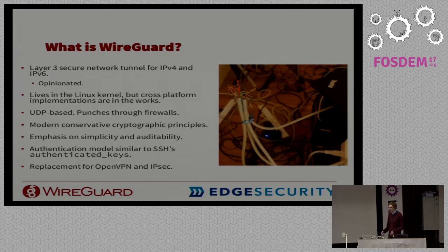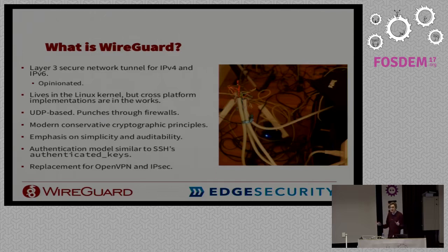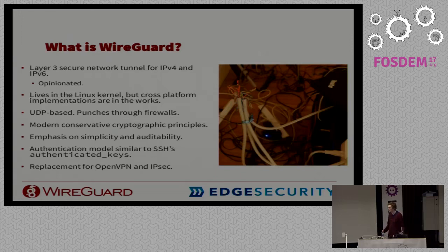The authentication model aims to be like SSH. In SSH, you usually share keys by sending your public key through an encrypted email or some other mechanism — simple public keys that you copy and paste around. WireGuard tries to be as easy as that, but for VPN. In general, it aims to be a replacement for OpenVPN and IPsec and the various other VPN technologies out there. WireGuard tries to replace most of that with something a lot simpler.